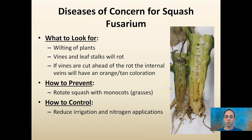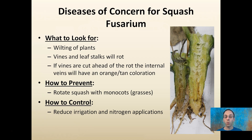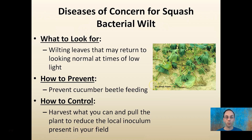For Fusarium, what to look for is wilting plants. The vines and leaf stalks will rot, and if the vines are cut ahead of the rot, you can look for that orange, tan coloration in the internal veins. You want to rotate your squash plantings with monocots or grass species to help reduce this problem. Also, don't over-irrigate or over-apply nitrogen, as both of those will encourage Fusarium to develop.